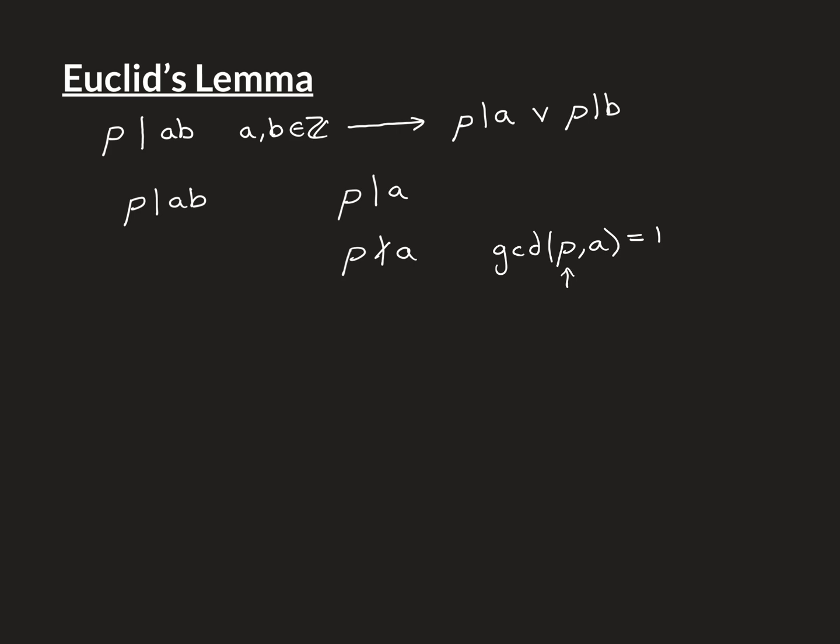So the only divisors it has, if we make a great big list for all its divisors, they are itself P, 1, and then the negative versions of those two numbers. So minus 1 and minus P. This is the complete list of all integers that divide that because it's a prime number.